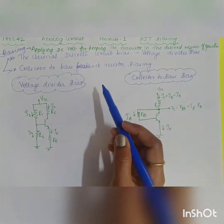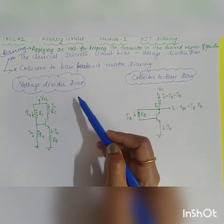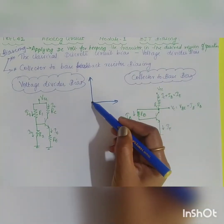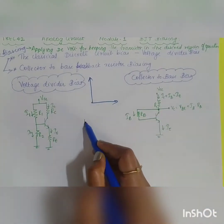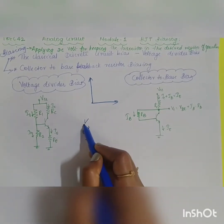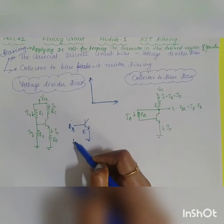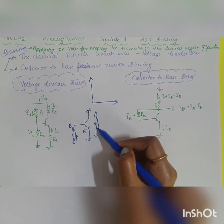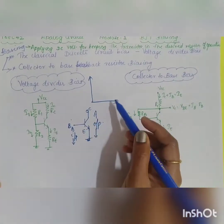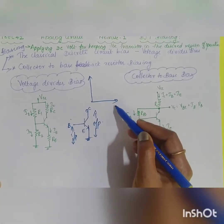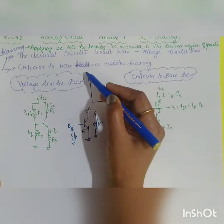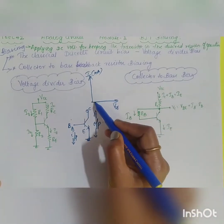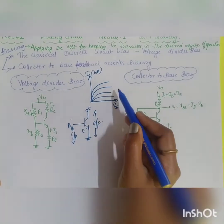The transistor has three modes of operation. Since we are dealing with the common emitter configuration, let us see the output characteristics of the CE configuration. In common emitter configuration, the emitter is grounded, the base-emitter is the input, and the collector-emitter is the output. The output characteristics are a graph plotted between output current IC and output voltage VCE, keeping input current IB constant.